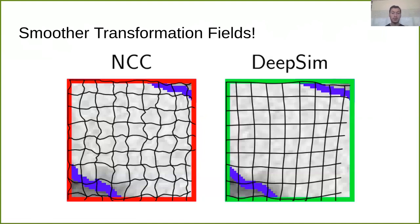We also observe smoother transformation fields with our DeepSim metrics. Here we highlighted a noisy background patch from one of the datasets. We can see with the normalized cross-correlation, it tries to align these image patches. We get a very non-smooth transformation field in the background of this image, while our DeepSim metric is much smoother here. So it seems that our metric learned that there is no semantic meaning in this background noise. It's just background, and it doesn't matter for our registration task. And accordingly, it doesn't try to align this noise.